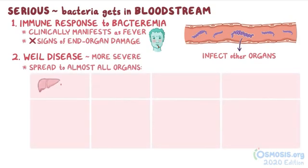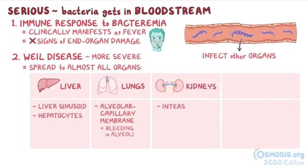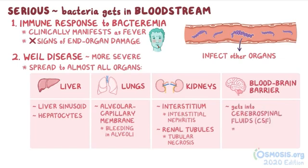Frequently affected organs include the liver, where the bacterial toxins damage liver sinusoids and hepatocytes, causing bilirubin to spill into the bloodstream, which clinically translates as jaundice. When the lungs are affected, the toxins damage the alveolar capillary membranes, which can result in bleeding within the alveoli. If leptospira gets into the kidneys, it can infect the interstitium, causing interstitial nephritis, or it can cause an inflammatory reaction that damages the renal tubules, resulting in acute tubular necrosis. Finally, the bacteria can even migrate from the bloodstream and use its toxins to break through the endothelial cells that make up the blood-brain barrier to get into the cerebrospinal fluid, or CSF, causing meningitis.